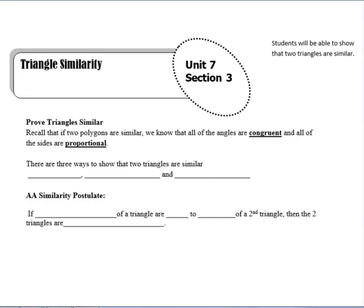All of last section we talked about similar polygons, and one of the key concepts there was that to prove that two polygons were similar, we needed to know that all of the angles were congruent and that all of the sides were proportional. That concept is still going to be reoccurring here, except now our main focus is just on triangles. There are actually three ways to show that triangles are similar: angle-angle similarity, side-angle-side similarity, and side-side-side similarity.